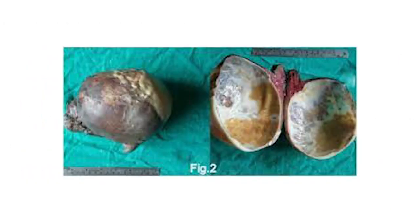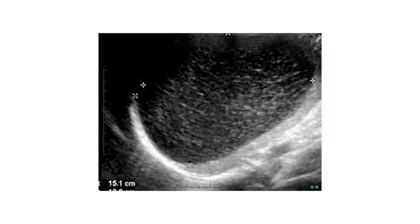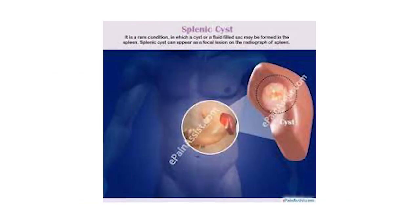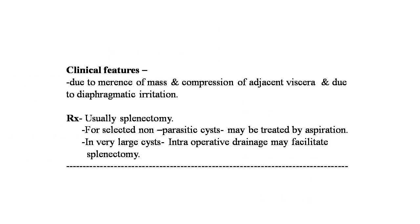You are watching on your screen the parasitic cyst of the spleen — this is the ultrasound image and the CT scan image of a parasitic cyst. The clinical features of the cyst are due to the presence of mass and compression of adjacent viscera, and due to diaphragmatic irritation, there is dull pain in the left upper quadrant. Treatment is essentially splenectomy. Selected non-parasitic cysts may be treated by aspiration, and in very large cysts, intraoperative drainage may facilitate splenectomy.